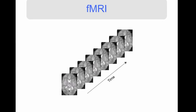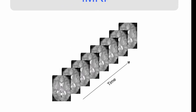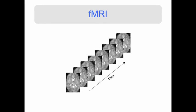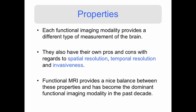Here's an example of some fMRI data. We have a bunch of images that are measured over time — that's where the functional part of fMRI comes in. We'll study changes in these images over time while the subject performs some set of experiments.